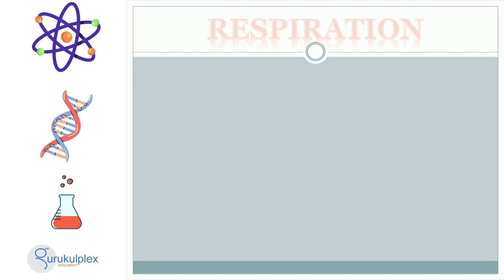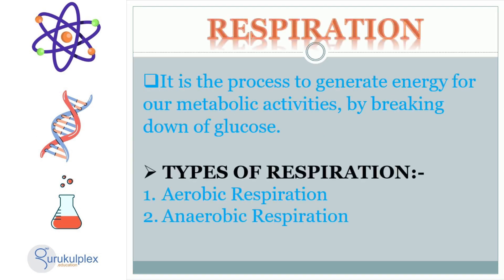Our bodies require energy for metabolic activities, and the process by which we obtain this energy is respiration. Respiration is the process of breaking down glucose molecules into energy. There are two types of respiration: aerobic and anaerobic. Aerobic respiration requires oxygen, whereas anaerobic respiration does not. Both types of respiration help our bodies convert glucose into energy that is used for metabolic activities.